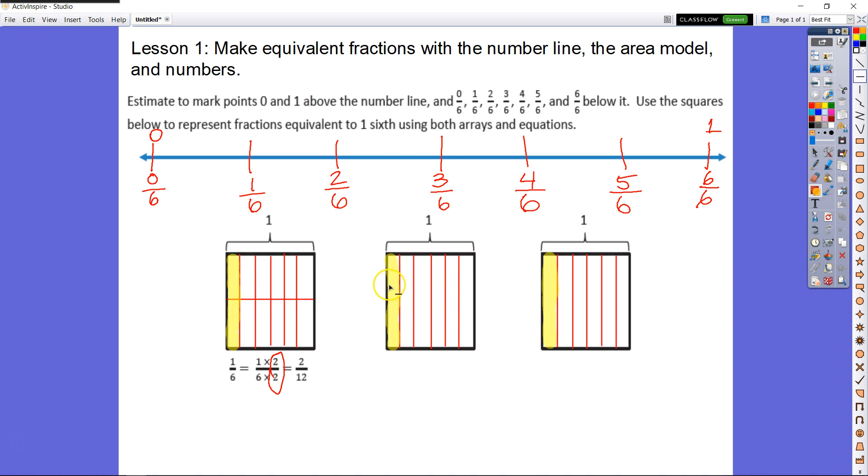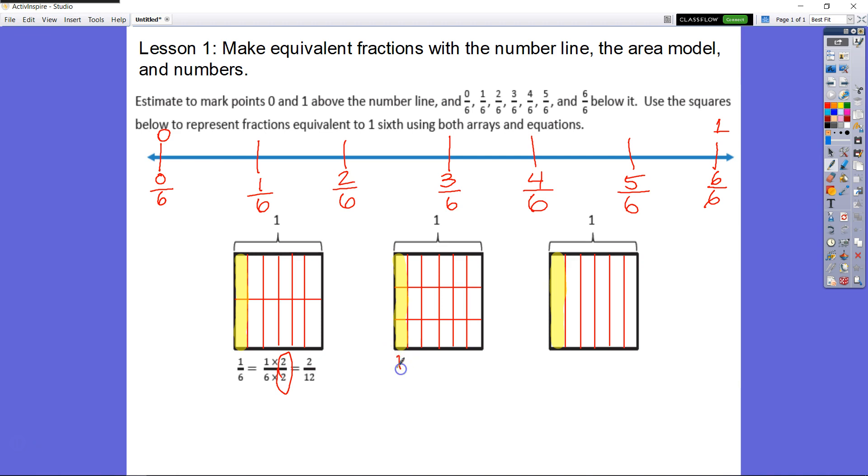We want to do the same thing, but instead of halves, we're going to split each sixth into thirds. And we will write this fraction as 1/6 is equal to 1/6 times 3/3, which is equal to 3 out of 18. So 3, 6, 9, 12, 15, 18.